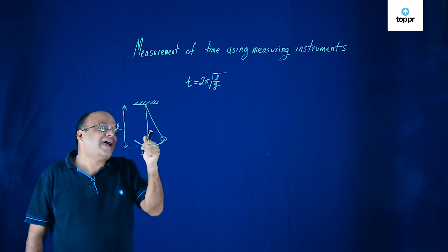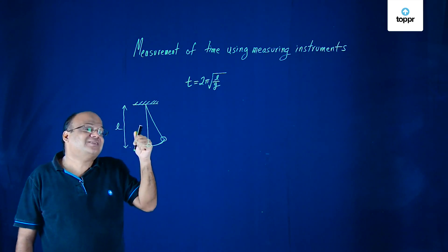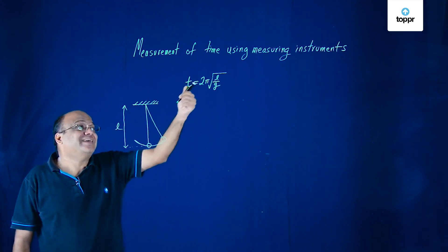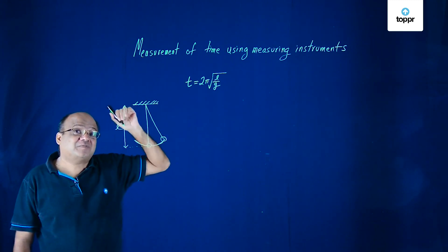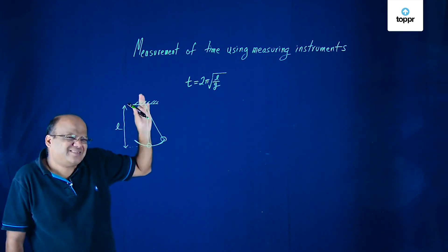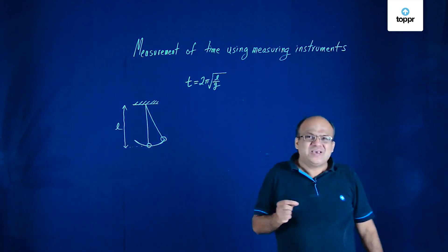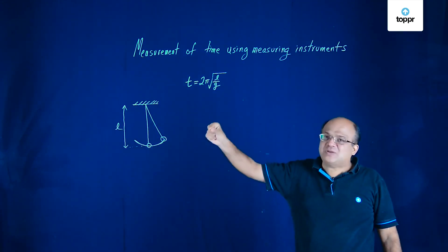So if this is filled with sand and the sand is slowly flowing out, as the sand flows out the time period initially increases because the length increases, then it decreases and comes back to the old value. Interesting question on simple pendulum. So simple pendulum we can use to measure time.